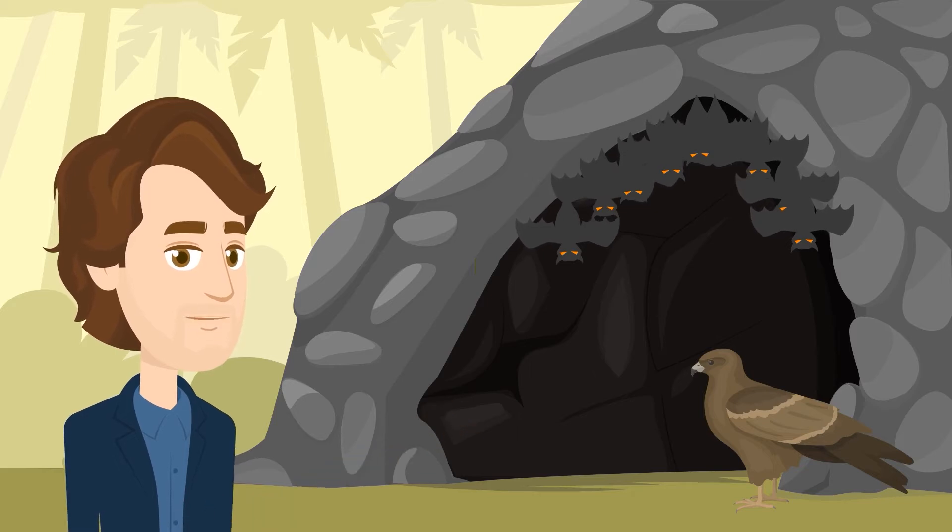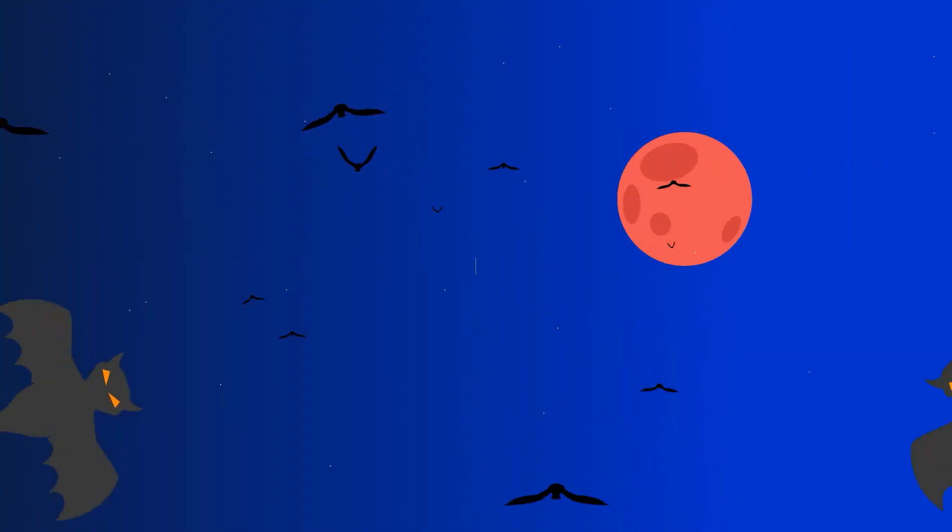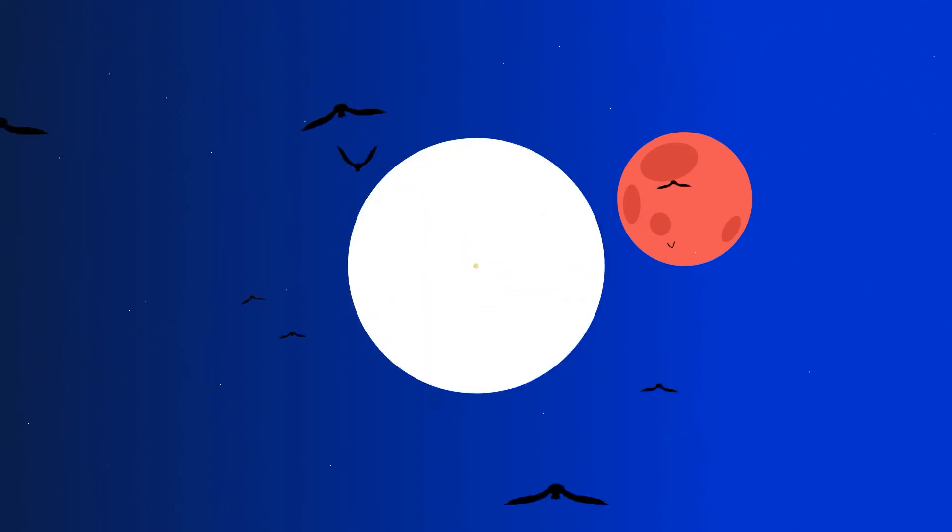Bats are one of the favorite meals of birds of prey. But these birds hunt only during the day because they are practically blind when nighttime falls. So bats, due to their survival instincts, have become active at night when their predators are asleep.